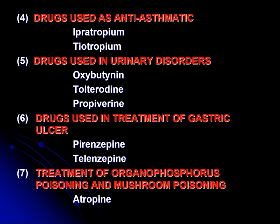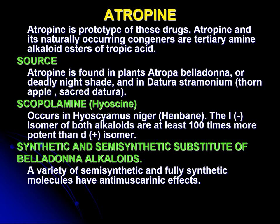Now we discuss the prototype drug, which is atropine, among these anti-cholinergic or anti-muscarinic drugs. Atropine and naturally occurring congeners are tertiary amines and are alcohol esters of tropic acid. As far as the source of atropine is concerned, it is obtained from the plants Atropa belladonna, which is also called deadly nightshade, and from Datura stramonium, which is called thorn apple or sacred datura.